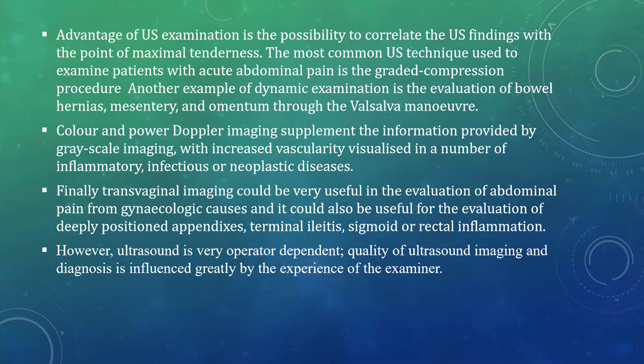Advantages of ultrasound examination include the possibility to correlate the ultrasound findings with the point of maximal tenderness. The most common ultrasound technique used to examine patients with acute abdominal pain is the graded compression procedure. Another example of dynamic examination is the evaluation of bowel hernias, mesentery and omentum through the Valsalva maneuver. Color and Power Doppler imaging supplement the information provided by grayscale imaging with increased vascularity visualized in inflammatory, infectious or neoplastic diseases. Finally, transvaginal imaging could be very useful in the evaluation of abdominal pain from gynecological causes and also for evaluation of deeply positioned appendix, terminal ileitis, sigmoid or rectal inflammation. However, ultrasound is very operator dependent; quality of ultrasound imaging and diagnosis is influenced greatly by the experience of the examiner.